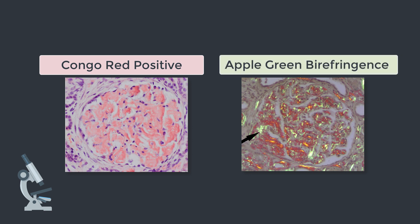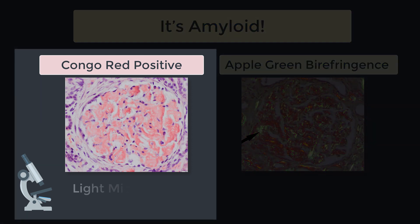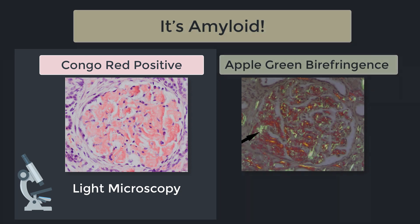Okay, so the biopsy buzzwords are congo red positive and apple green birefringence. If you see these words in your exams or in doctor life, it's amyloid — it can only be amyloid. So now let's break down what these terms actually mean. Congo red positive means that we have used a light microscope, stained that tissue with a congo red stain, and the congo red stain is positive. Too easy.